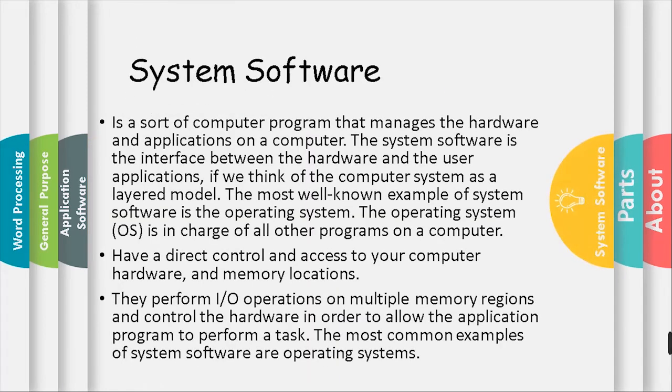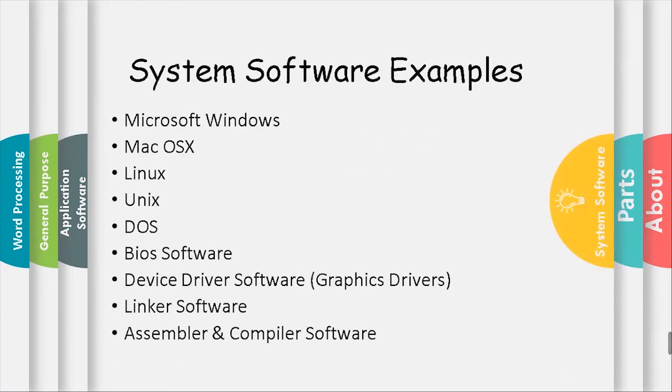System software is a sort of computer program that manages the hardware and applications on a computer. It is the interface between the hardware and the user applications. The most well-known example of system software is the operating system, which is in charge of all other programs, has direct control and access to computer hardware and memory locations, and performs I/O operations to allow application programs to perform tasks.